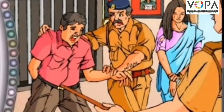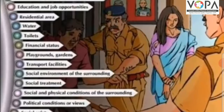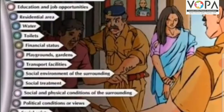These are the various factors which affect social health: food, clothing, shelter, water, medicine, education and job opportunities, residential areas, water, toilets, financial status, playgrounds and gardens, transport facilities, social environment of surrounding, social treatment, social and physical conditions of surrounding, political conditions or views, and social safety.